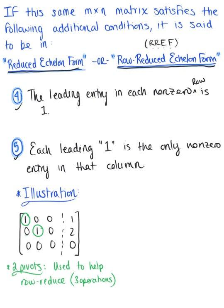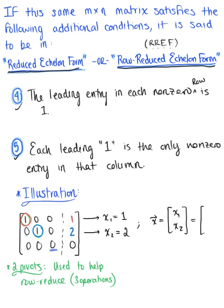This matrix is telling us the solution. The first column is associated with x sub 1, so x sub 1 is equal to 1. The second row tells us that x sub 2 is equal to 2, since the second column is associated with the second variable. Notice that the last row is entirely zeros — there is no pivot in that third position. This tells us there is no x sub 3, and that our solution vector x is in R2, so x = (1, 2).